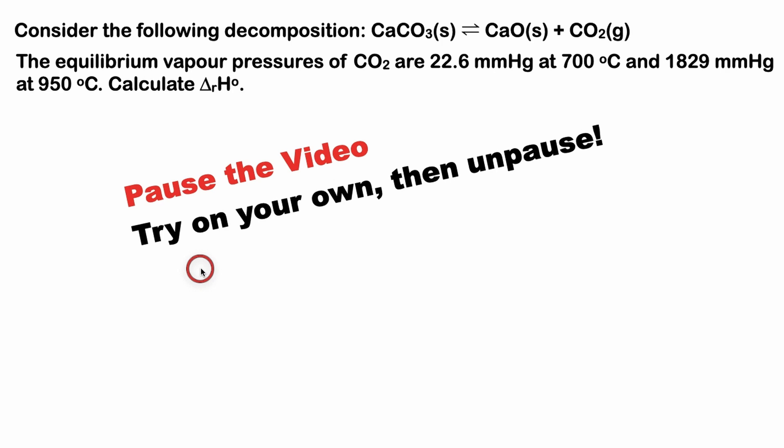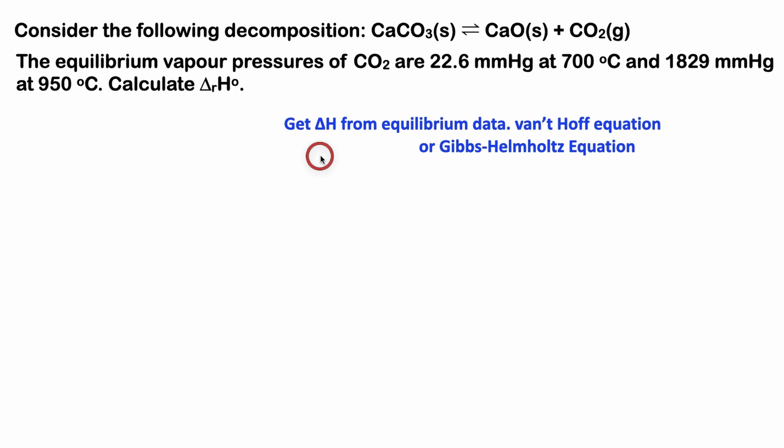Here's the solution. We can get the change in enthalpy from equilibrium data, and we could use the Van't Hoff equation or the Gibbs-Helmholtz equation. But as you know from the title, we're going to use the Van't Hoff equation in its integrated form. I've derived this a number of different ways—you can check out those derivations if you like. We're solving for the change in standard enthalpy.